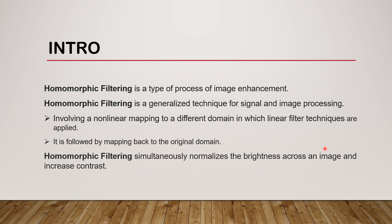So here, original image is being processed, which is mapped to a different domain, and then a linear filter is being applied at the end. Original image needs to be constructed. Homomorphic filtering simultaneously normalizes the brightness across an image and increases the contrast.